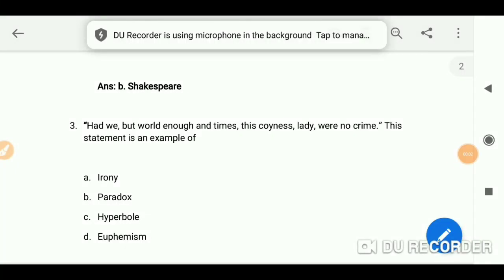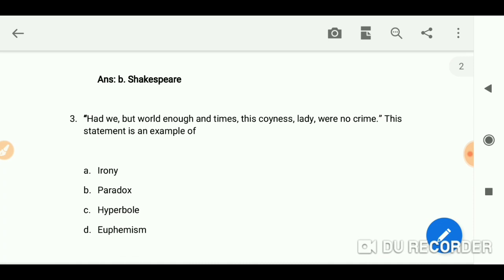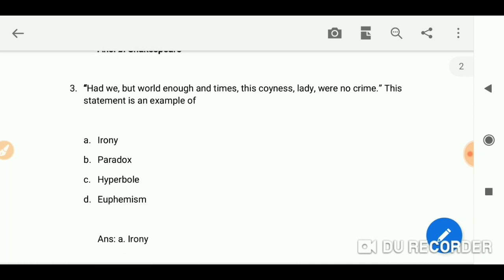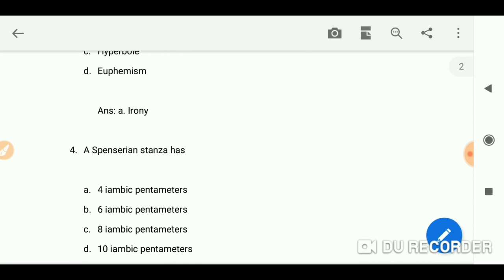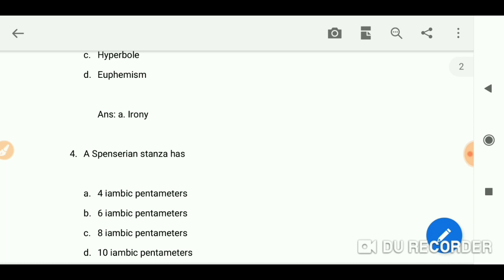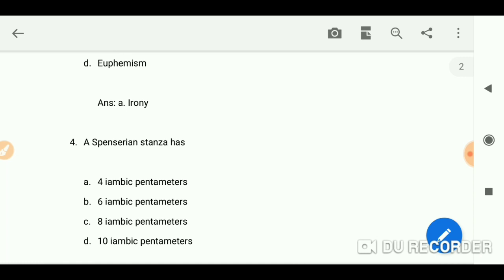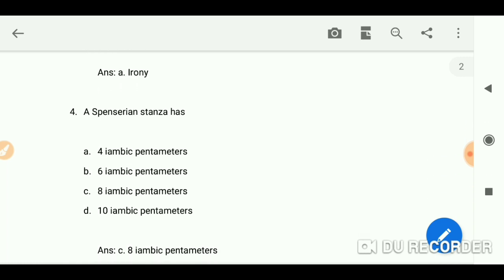Hello everyone, you are most welcome again on my channel. Let's practice some MCQs today. First one: 'Had we but world enough and time, this coyness lady were no crime.' This statement is an example of irony, paradox, hyperbole, or euphemism. The answer is paradox. Spenser's Spenserian stanza has eight iambic pentameters.